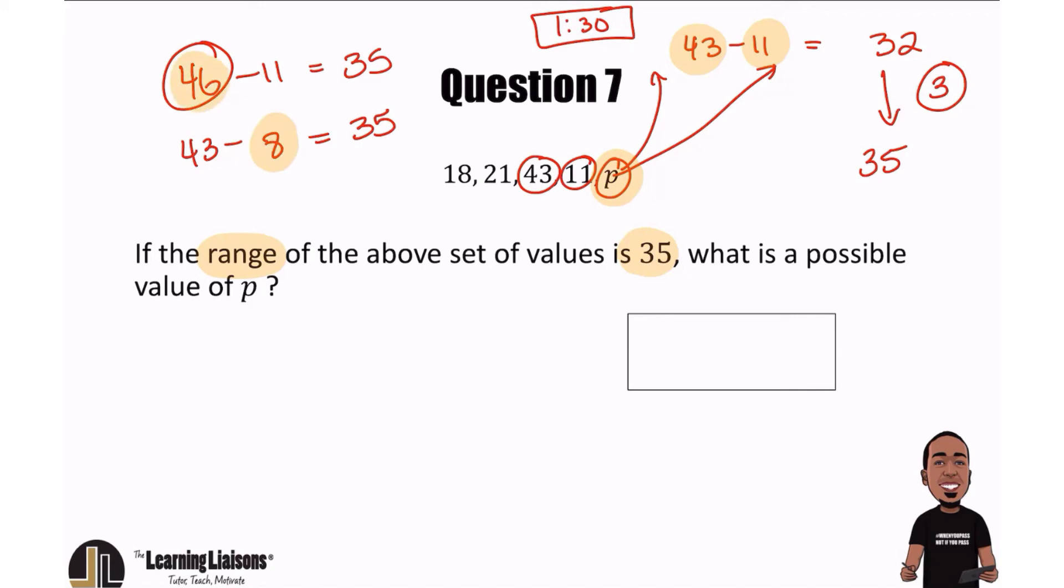So look at that. Those are the two possible values of P, 46 or eight. Either one works, and it's up to you to pick whichever one you want. They're both right, so don't get crazy confused. They said, what is a possible value of P? So 46 or eight would both work.